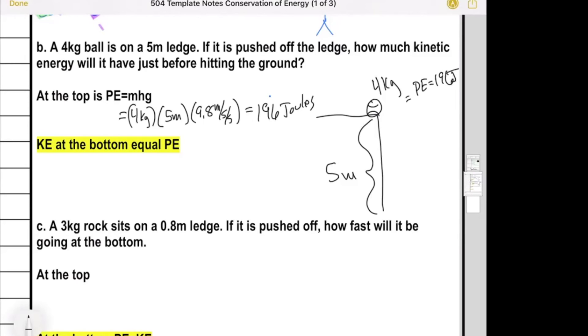Now when that falls off the edge at the bottom, it's moving fast. You know the kinetic energy because the potential turned into the kinetic. So if it has 196 of PE at the top, it has 196 of KE at the bottom. It doesn't matter what numbers we throw there, you just know the other one.